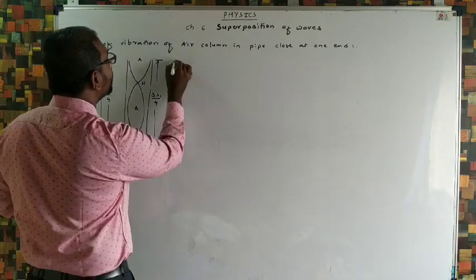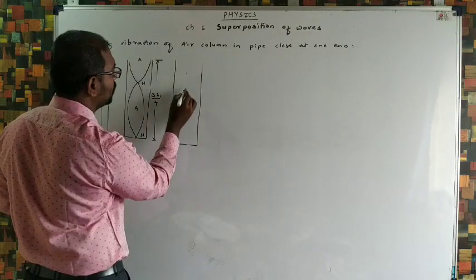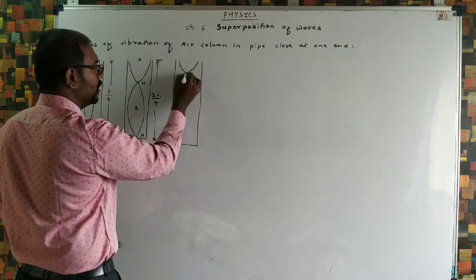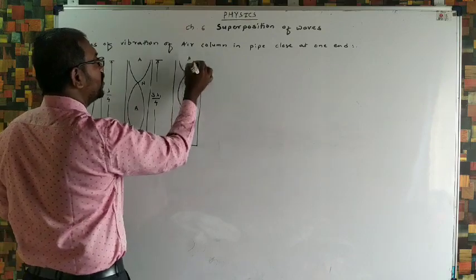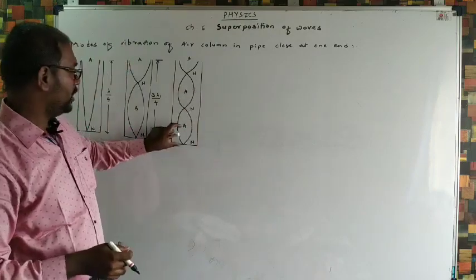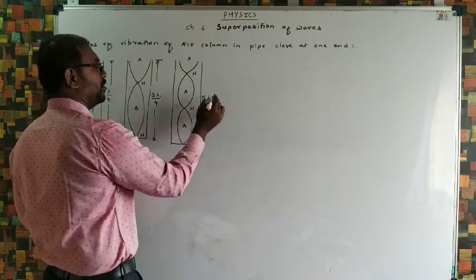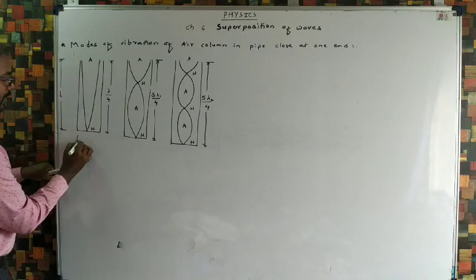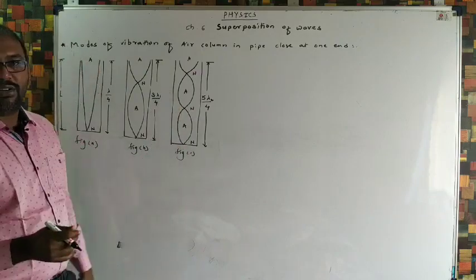For the third mode, we consider the same pipe divided into 5 equal parts. Half a part is a half loop, then a full loop, then another full loop. Antinodes are formed at positions 1, 3, and 5, and nodes at positions 2 and 4. The distance between each node and antinode is λ₂/4, and there are 5 such intervals, giving L = 5λ₂/4. We label these diagrams as Figure A, Figure B, and Figure C respectively.